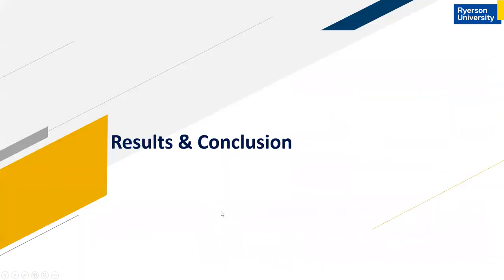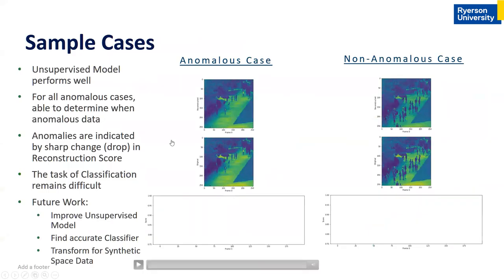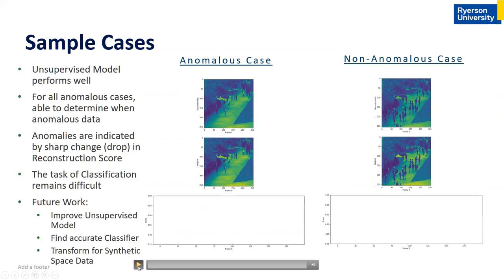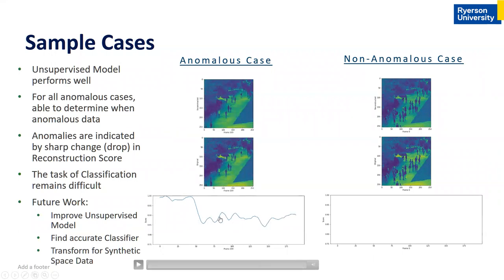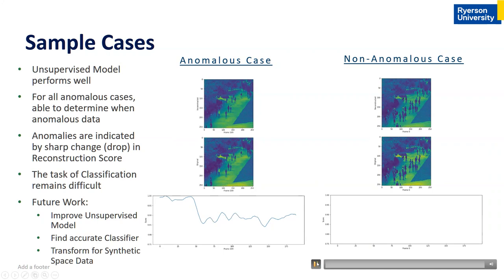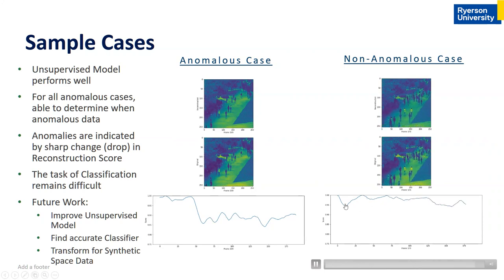So we proceed with the simple linear threshold. Running the model on all data: in an anomalous case, when we see non-pedestrian movement such as a bicycle or skateboarder, the reconstruction score drops, indicating anomaly detection. In a non-anomalous video with only pedestrians walking, the score remains high with only a small dip, and the model correctly classifies the video as non-anomalous.